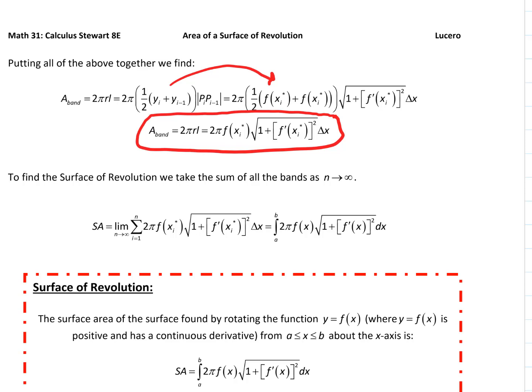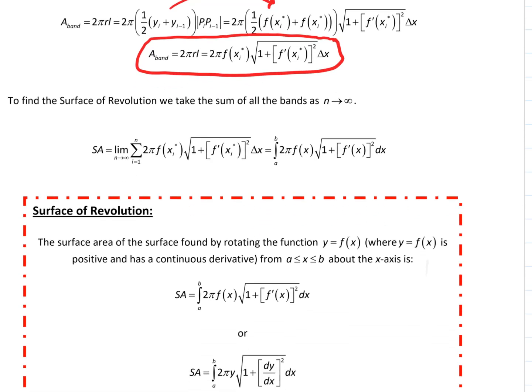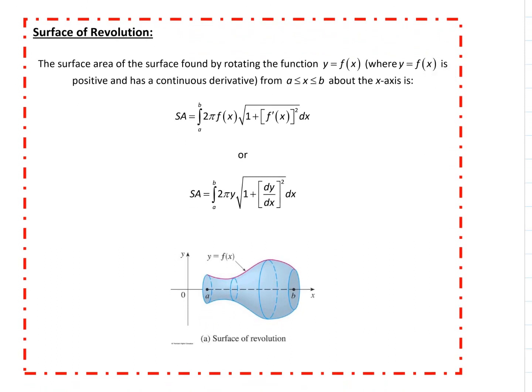Putting all that together, we throw a limit on it and end up with our surface area formula for a solid of revolution. The surface area of a solid found by rotating y equals f of x — where f is positive and has a continuous derivative — from a to b is the integral of 2π f(x) times the square root of 1 plus f prime of x squared dx. We can also write this using Leibniz notation. This is for rotation about the x-axis.